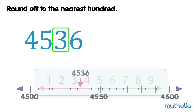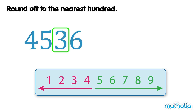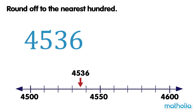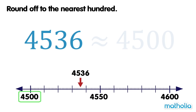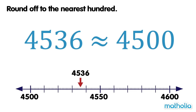Digits that are 4 or less are rounded down. So 4536 is rounded down to 4500. To the nearest hundred, 4536 is approximately equal to 4500.